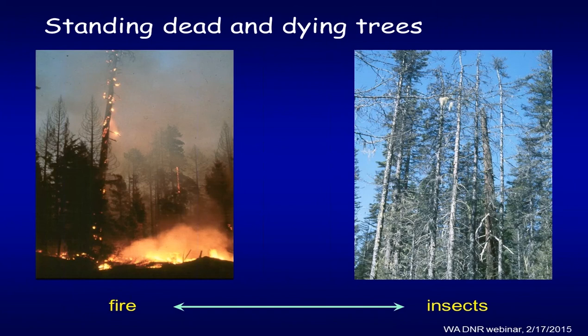Mortality can result because of a fire, but even if a tree survives a fire, its weakened state can send out an invitation for a free lunch to some of those beetles. They come in and attack, causing mortality if the tree didn't initially die from the fire. Consequently, you get similar deterioration patterns.